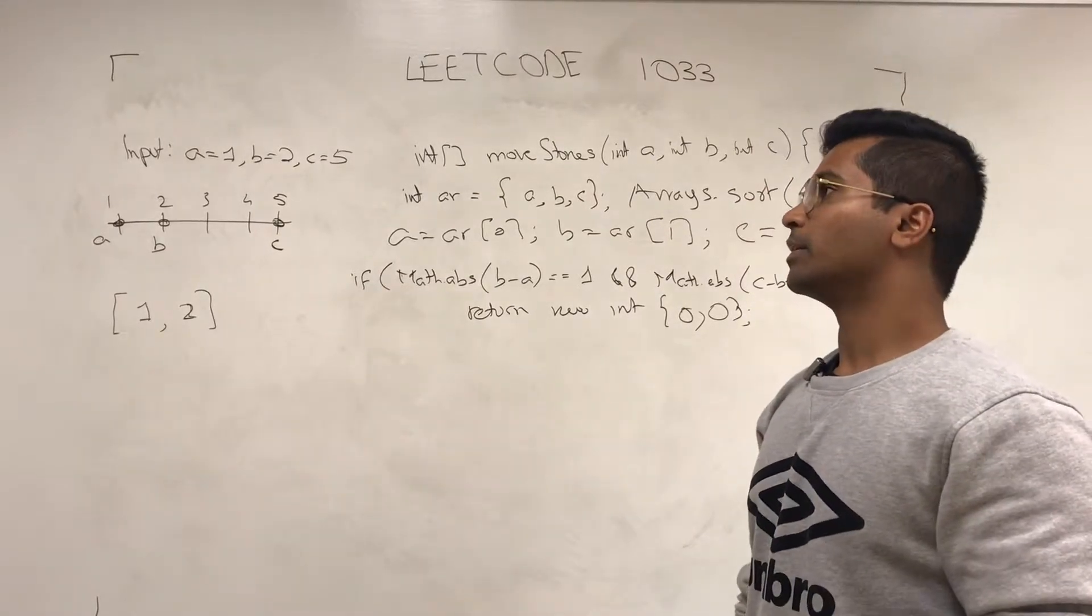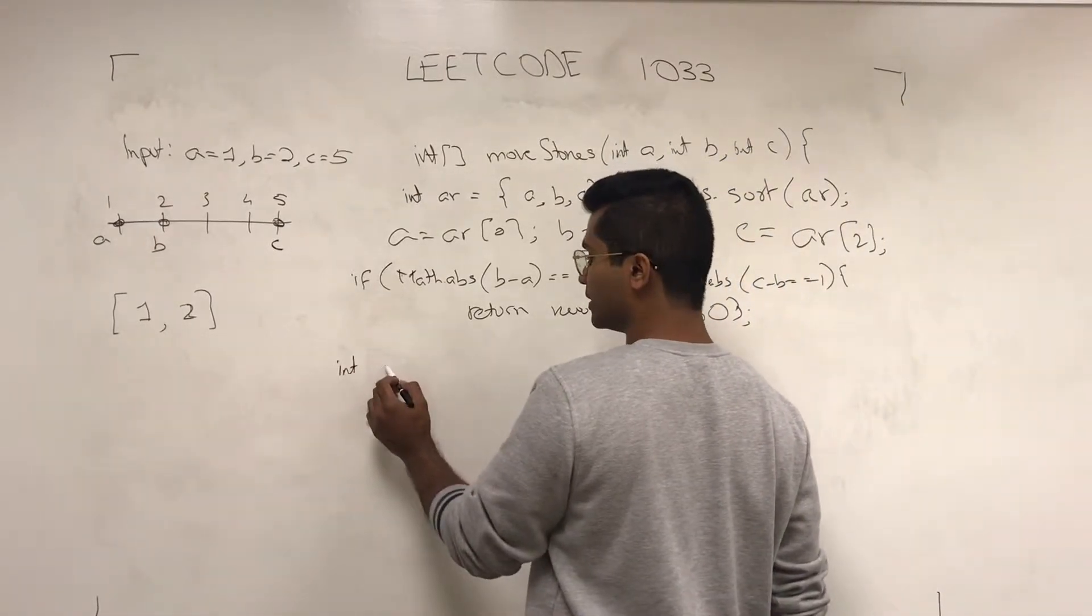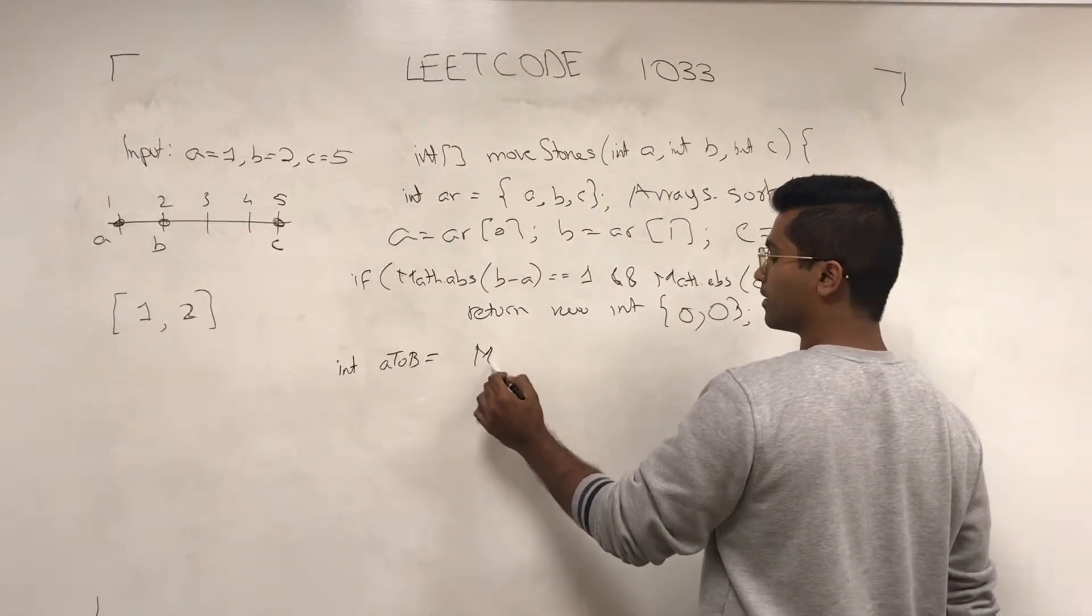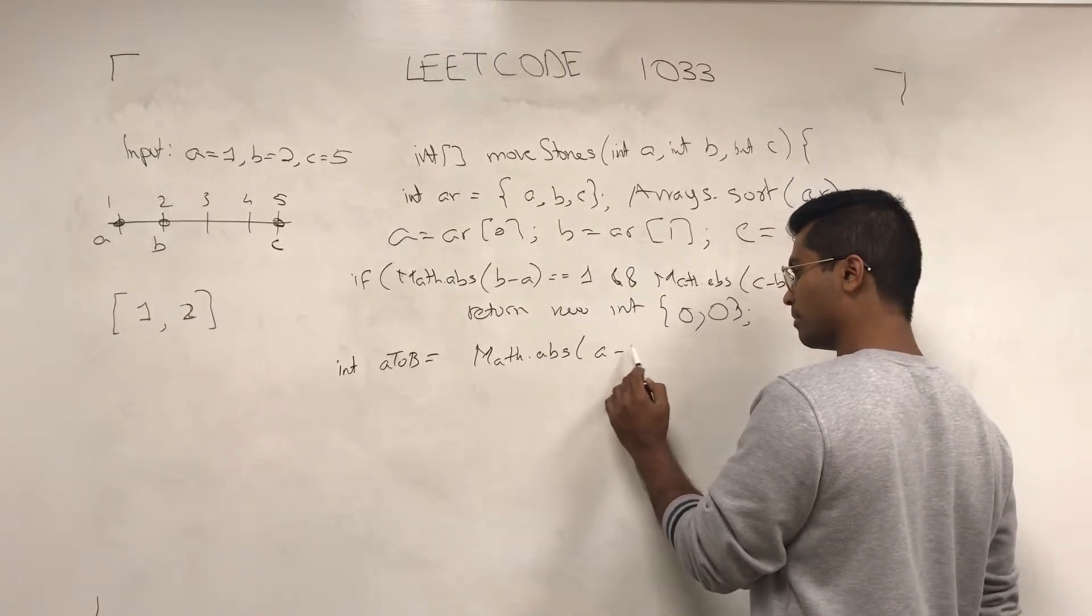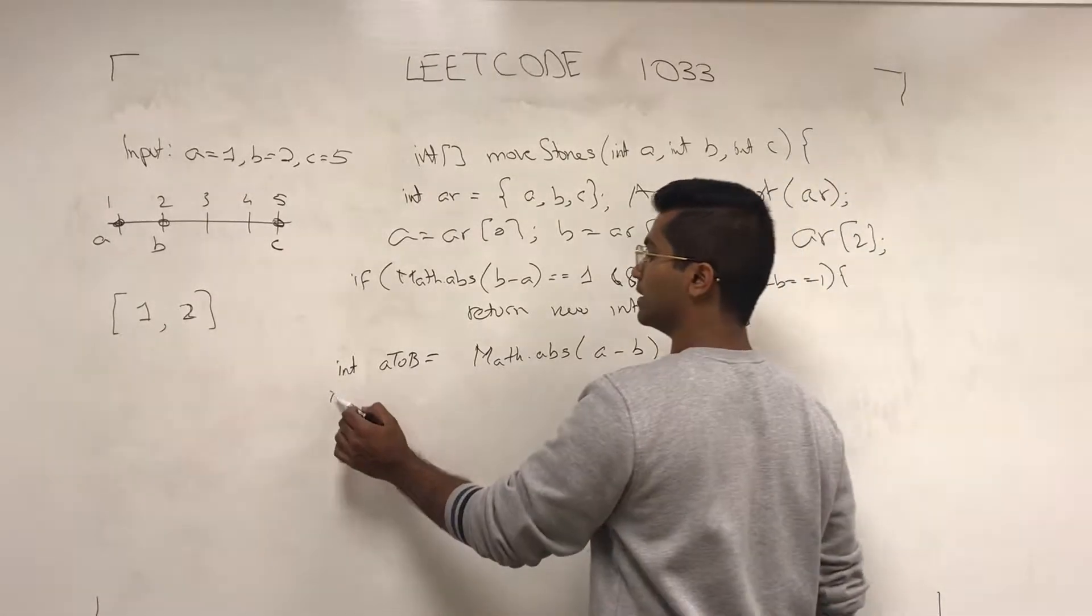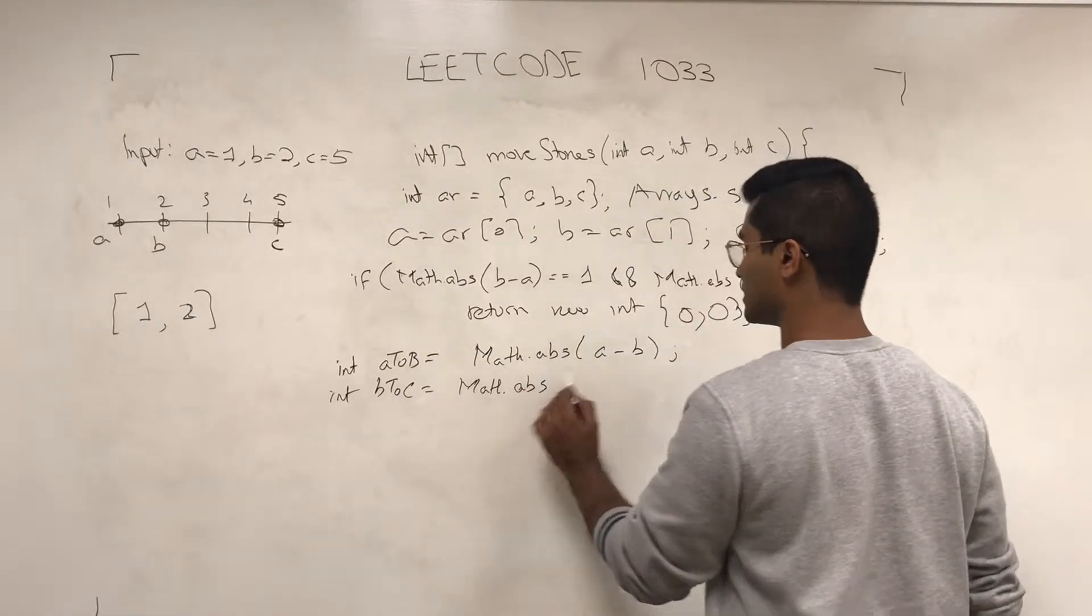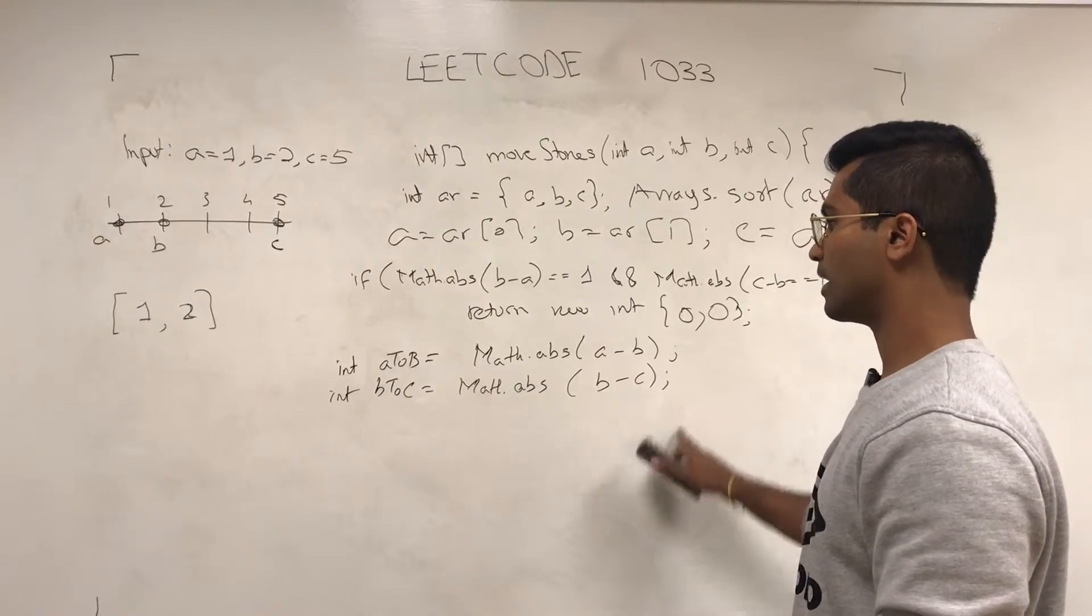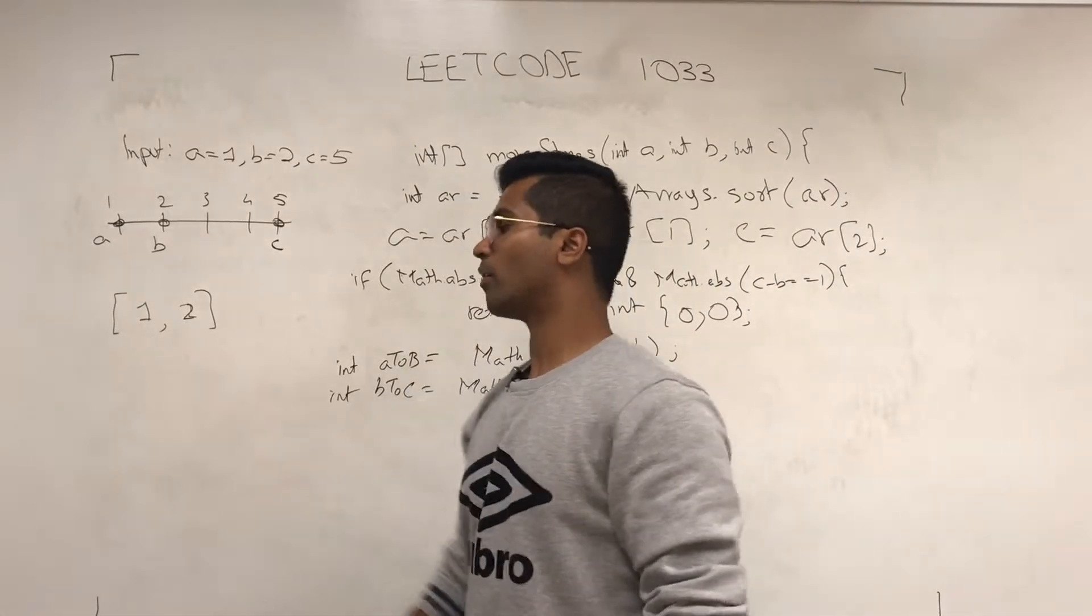Now I'm going to make use of two integers called int AtoB is going to be Math.abs(a minus b), and int BtoC is going to be Math.abs(b minus c). So once those two are there, we can figure out. Now when I create this one, I'm going to call this one AR1.